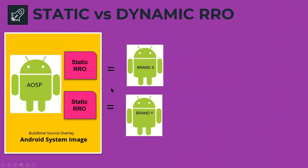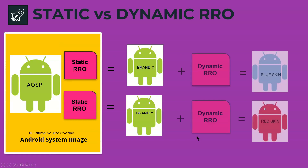Let's consider a real-world application of static and dynamic RROs. Consider mobile manufacturers like Samsung, Motorola, or Nokia — they could use a static overlay for creating different brands of mobile phones. In this case, brand X and brand Y are created from a single AOSP system image. Similarly, they could use dynamic RROs to create different skins for a system, such as a blue skin and a red skin on top of brand X and Y.